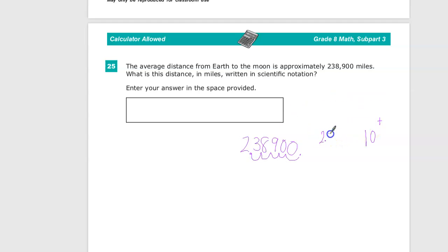2.389. And the zeros, I don't even need them. Times 10 to the positive, I moved it 1, 2, 3, 4, 5. So 2.389 times 10 to the fifth. And that's it.